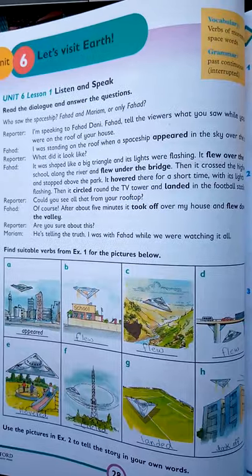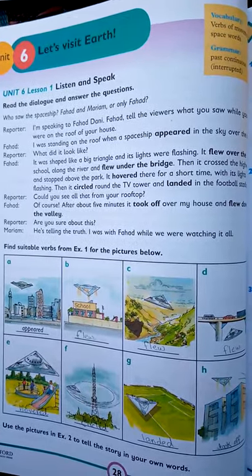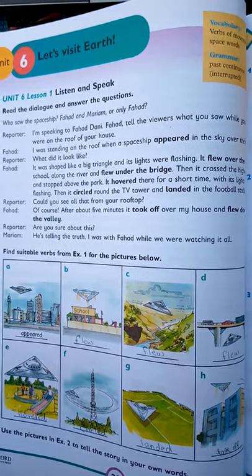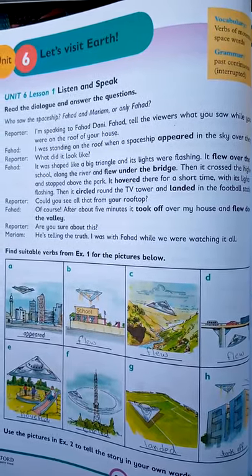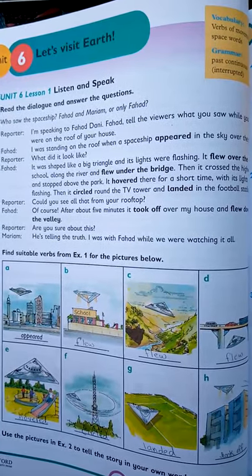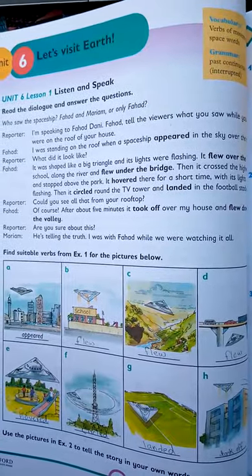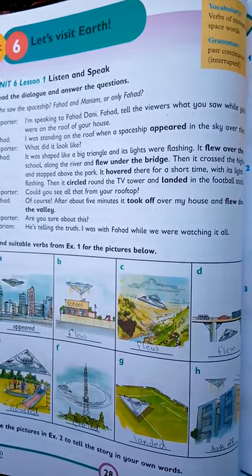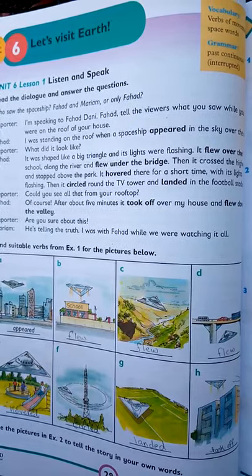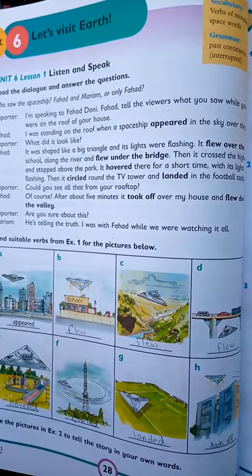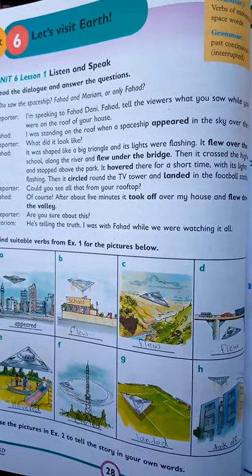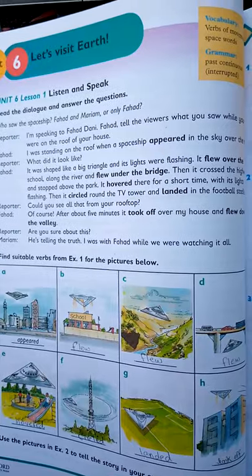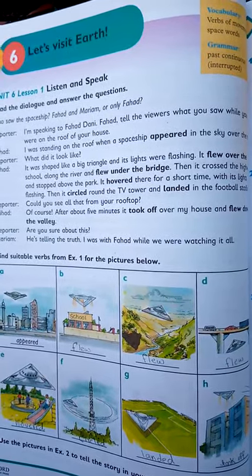This was the dialogue. A reporter asked Pahad Danny what he saw while standing on the roof. Pahad replied that he was standing on the roof when a spaceship appeared in the sky over the whole town. The reporter asked what it looked like, and Pahad replied it was like a big triangle with flashing lights. It flew over the school, along the river, and under the bridge.